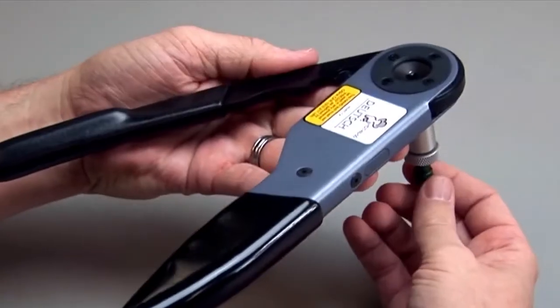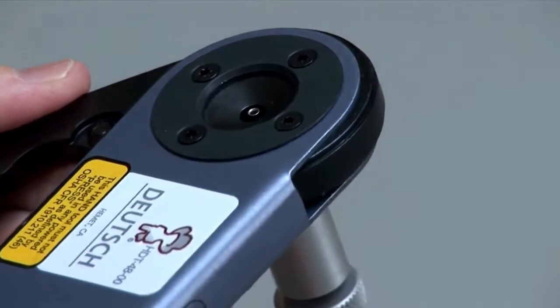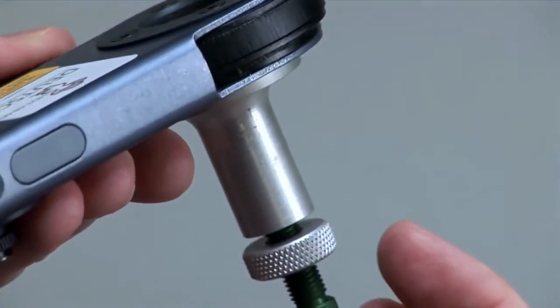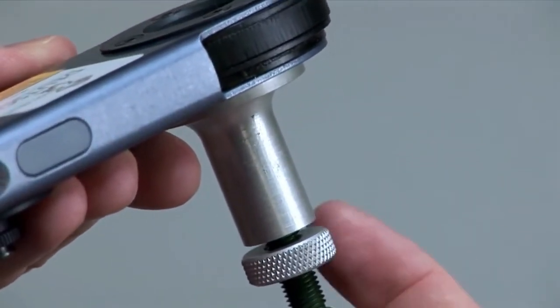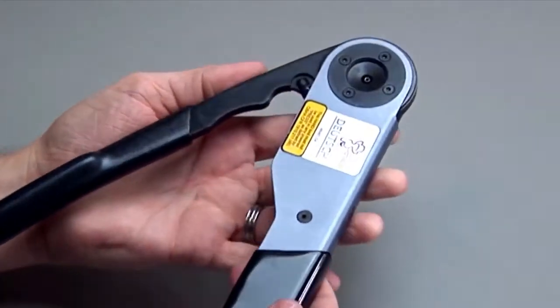You should be able to see the edge of the contact, but it should not be raised. The contact must be centered between the indicators. Tighten down the lock nut, but do not over-tighten.